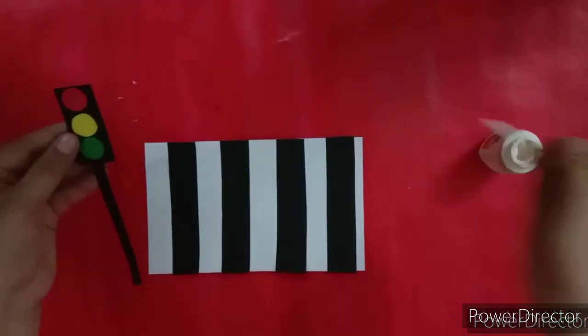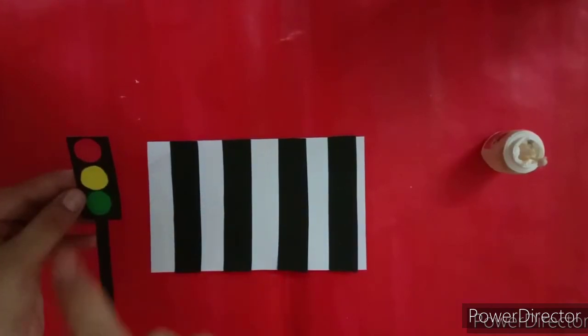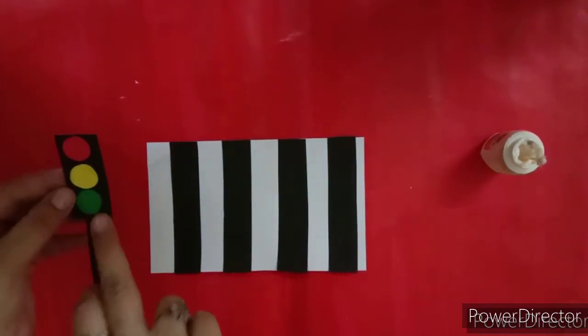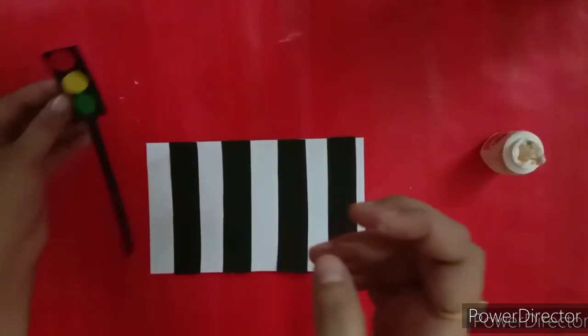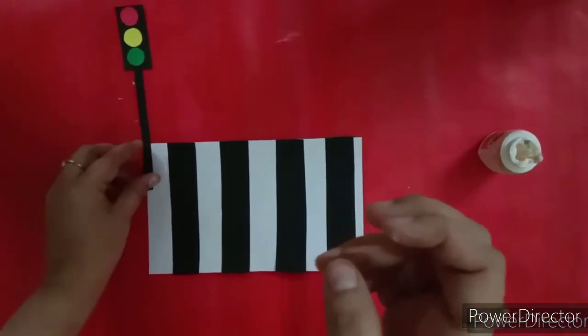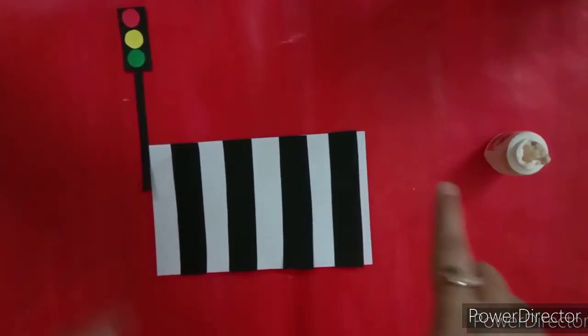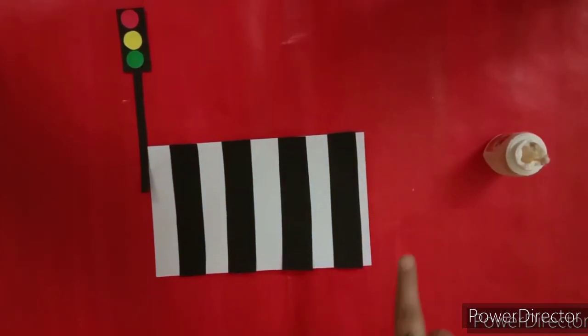Can you see this, children? Red says stop. Yellow says wait. And green says go. So, when the green light is on, you can cross the road while walking on the zebra crossing.